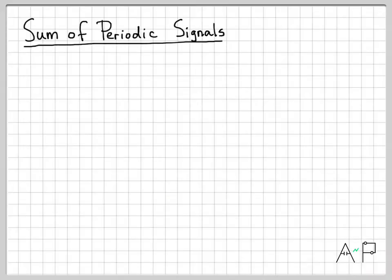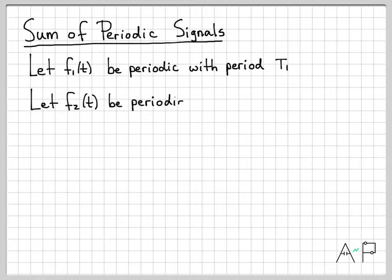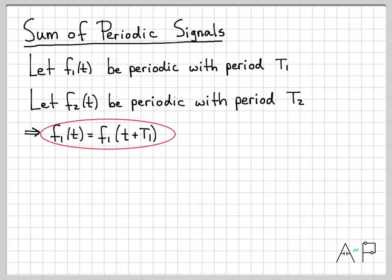Let's look at the sum of periodic signals. The first signal will be f1(t) with period T1, and the other signal is f2(t) with period T2. If f1(t) is periodic with period T1, this holds for all time. If I can go forward one T1, I can go forward some integer multiple of T1s and also get back to where I started.